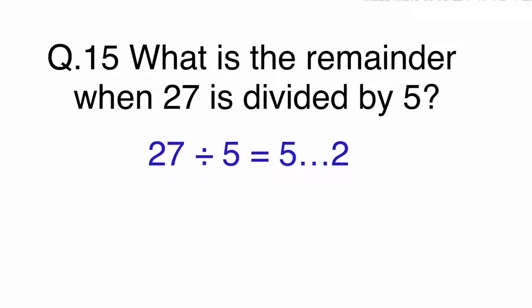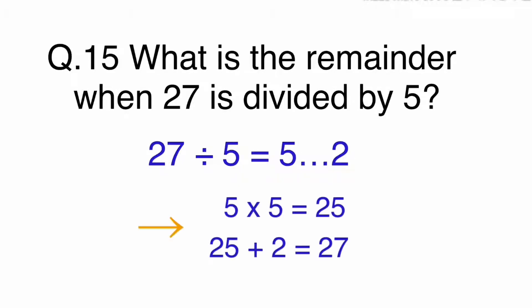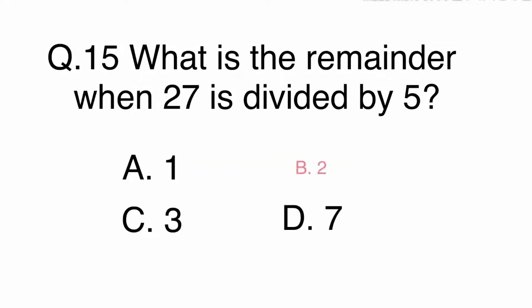27 divided by 5 equals 5 remainder 2. To check the answer you can do 25 plus 2 which equals 27. The answer is B. 2.